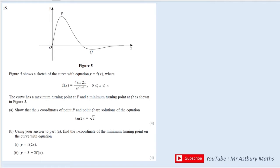So whenever I have a function which is a quotient or it's a fraction essentially, I can use the quotient rule. So I would write that u, the numerator, is equal to 4 sine 2x. And I would write that v, the denominator, is e to the root 2x minus 1.